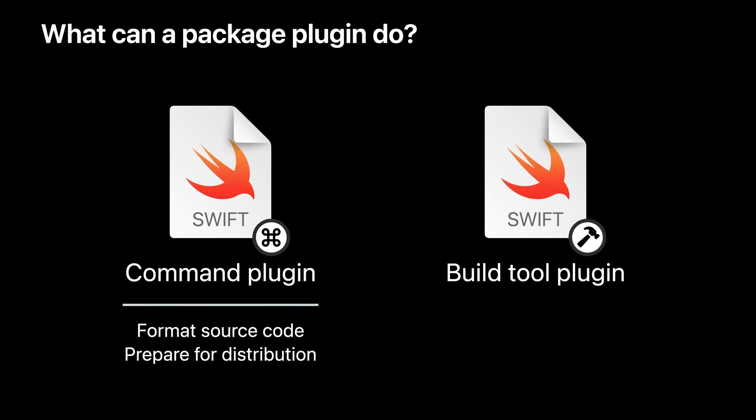Command plugins implement custom actions that you can run whenever you want to. They can run source code formatters or linters, or perform other tasks as part of your development workflow — like updating contributor lists or copyright dates in source files based on git history. A command plugin can ask for permission to modify the files in a package, which is especially useful for code formatting. Not all command plugins need write permission; some could create reports or calculate metrics about your code without making any changes.